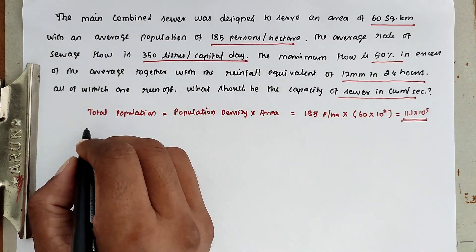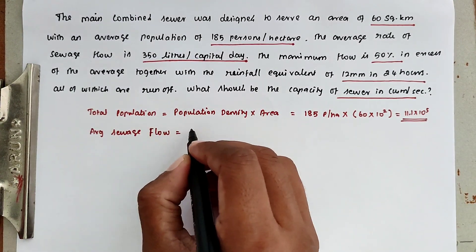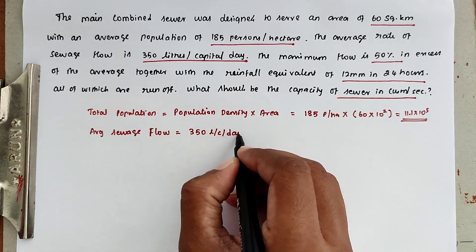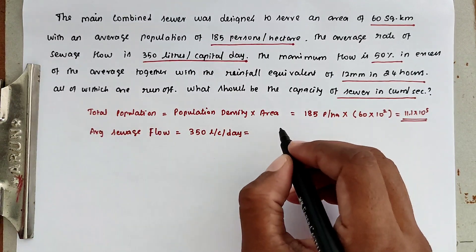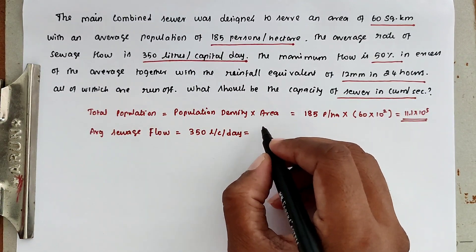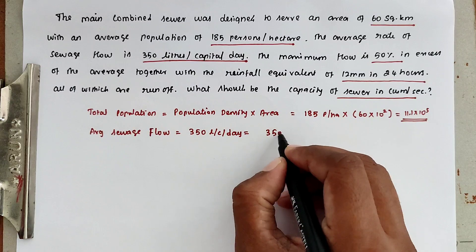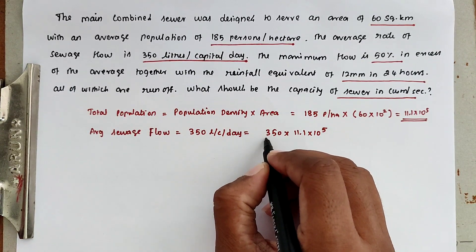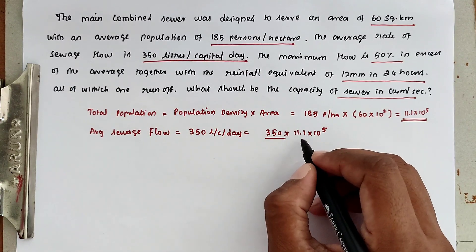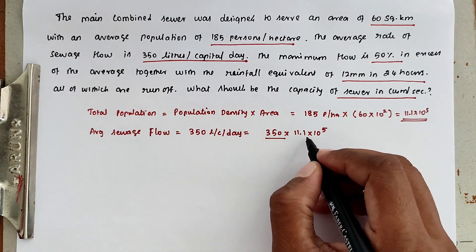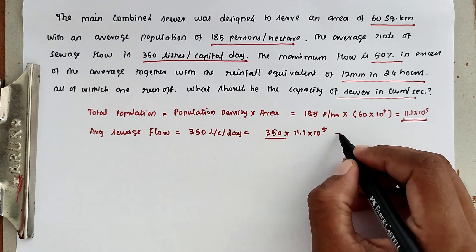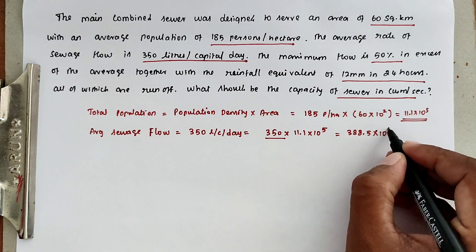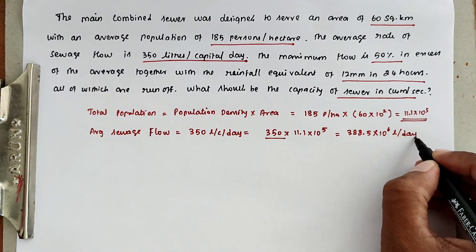Now the average sewage flow is 350 liters per capita per day. The total sewage quantity is 350 into 11.1 into 10 power 5. Per person there is 350 liters, so total persons is 11.1 × 10⁵ liters. Now we get the value of 388.5 into 10 power 6 liters per day.